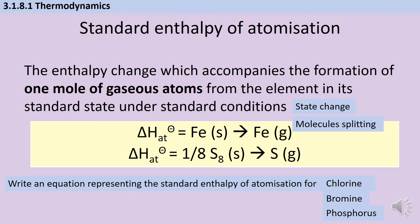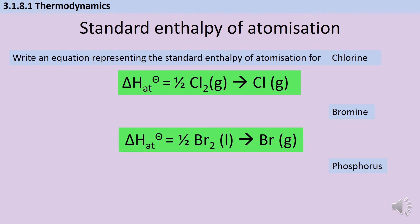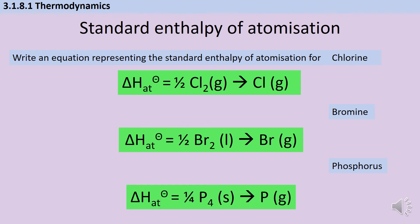For the standard enthalpy of atomization of chlorine, bromine, and phosphorus, there are two things to watch for: the correct standard states at the start and gas at the end, and always making one mole of atoms. So we have half a mole of Cl₂ gas for chlorine, half a mole of liquid Br₂ producing bromine gas for bromine, and a quarter of a mole of solid phosphorus turning into phosphorus gas.